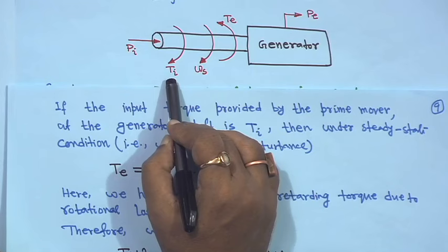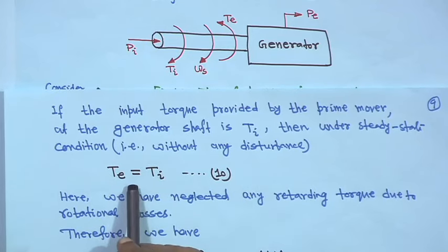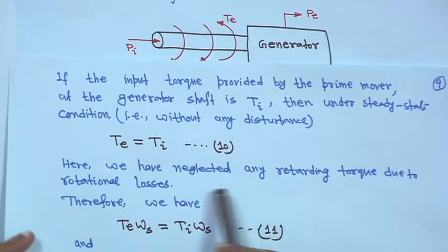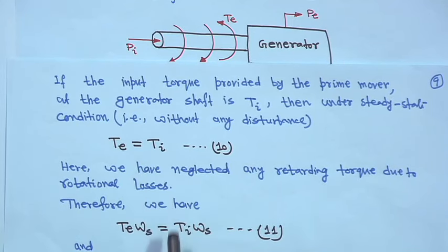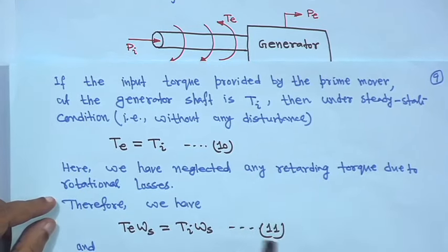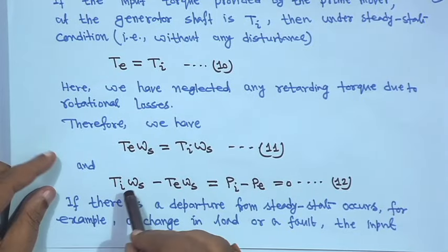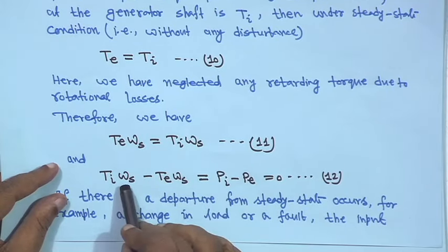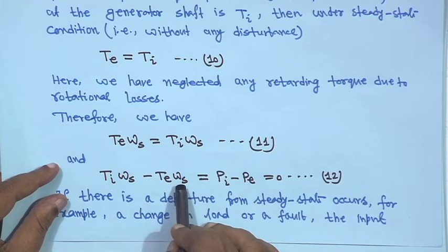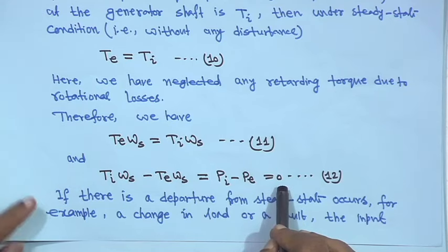So T_e equals T_i at steady state, with all losses neglected. If you multiply both sides by ωs, the synchronous speed, then T_e × ωs = T_i × ωs, and since power equals torque times angular speed, this gives P_i − P_e = 0 at steady state condition. This is equation 12.